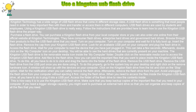Access the Flash Drive. Wait for your computer to read the device that you have just plugged in. This can take a few seconds. Afterward, double click on the My Computer icon on your desktop. You will be able to see the hard drives currently present on your machine. The Kingston USB Flash Drive is the removable media icon inside the My Computer folder. Double click on the removable media icon to access the Kingston USB Flash Drive.